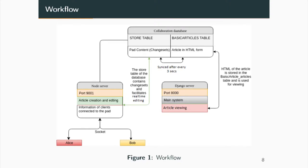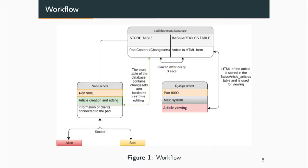This is the workflow diagram. The Node server runs the Etherpad instance on port 9001 and helps in article creation and editing. The store table of the collaboration database keeps all required content in the form of change sets. When the user views the article, the basic article table is used because the article is stored in HTML format, not as change sets. The store table and the basic article table are synced every 3 seconds so the user can be updated. Real-time communication happens through Socket.IO.